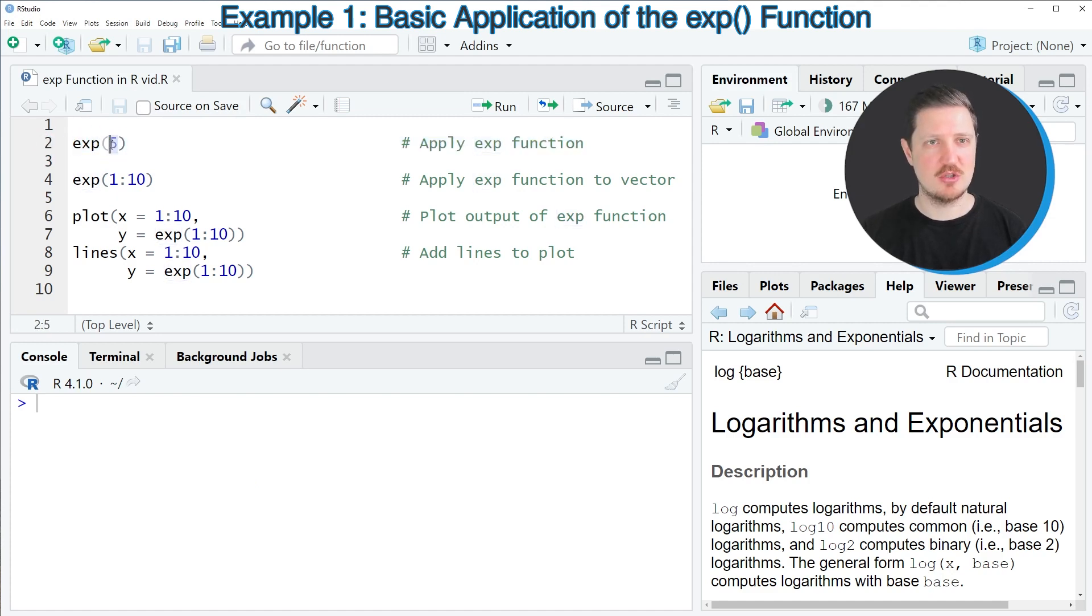I'm applying the EXP function to the value 5. And after running this line of code, you can see at the bottom in the RStudio console that the value 148.4132 is returned. And this value is the exponential value that corresponds to the value 5.